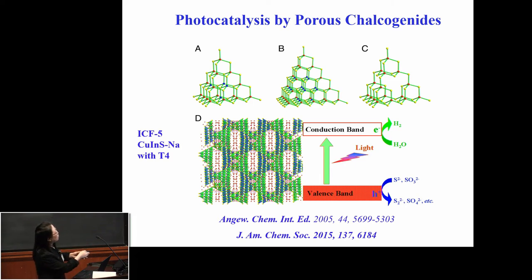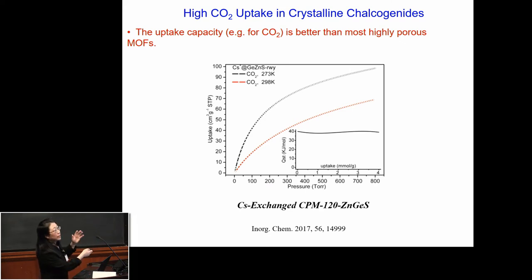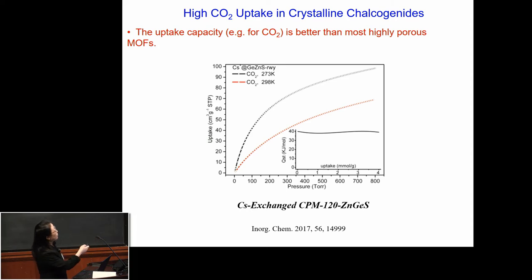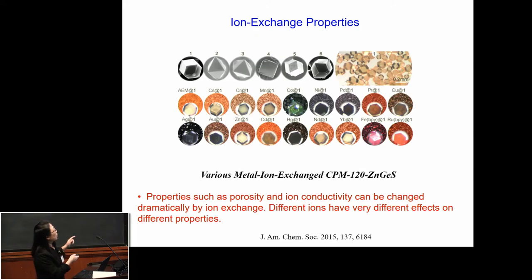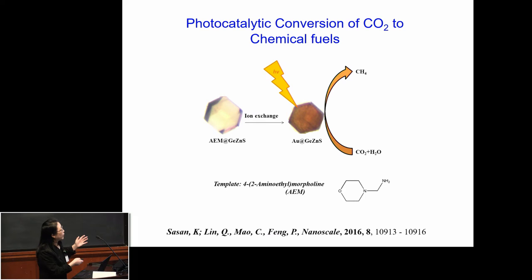This material also shows very high uptake for carbon dioxide — the uptake capacity is similar to MOFs, and for some MOFs this material is even better. Because we have semiconducting properties, we can introduce different metals into the channel and use this material as a photocatalytic material to convert carbon dioxide to methane. The yield is currently very low; we can only characterize methane and believe other chemical species are present. We are still working on this.